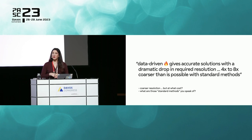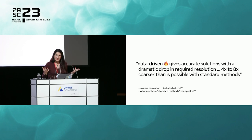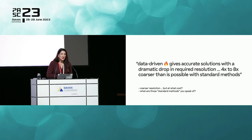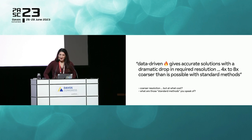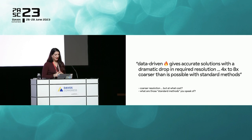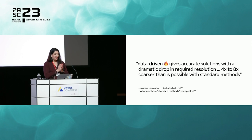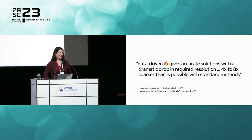Here's a quote: 'This data-driven method gives accurate solutions with a dramatic drop in required resolution — resolutions four or eight times coarser than possible with standard methods.' If you're using coarser resolutions, you're saving compute time. But at what cost did you generate the model? If I had to invest four times as much effort to get a method that gives four times coarser resolution, I didn't move. I'm in the same spot. And what are those 'standard methods' you speak of? It's dissatisfying to read about coarser resolutions while omitting any mention of the cost, right in the abstract.